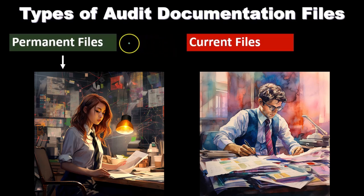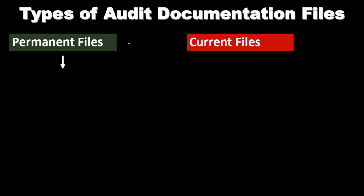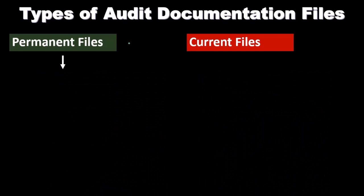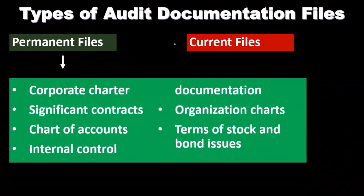The permanent file will have information that's going to be there for long periods of time. When setting up your auditing system for clients in public accounting, you want to think about what types of files aren't going to change — those go in the permanent file. Files that are going to change each year, possibly on a yearly audit basis, go in the current file.